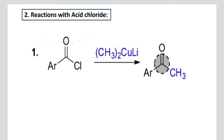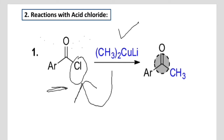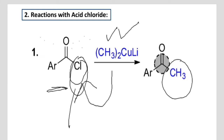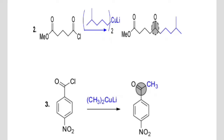Now we will study how the Gilman reagent reacts with acid chlorides. It is quite simple: in place of the chloride, we substitute the Gilman reagent. Methyl will replace the chlorine, and in the position of chlorine the methyl group will be attached.